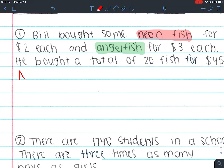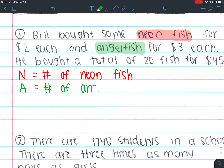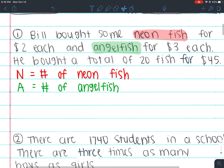Our first variable is n, representing the number of neon fish. We have to be specific — not just 'neon fish,' but the number of neon fish. And our other variable is a, representing the number of angelfish. You might wonder why not use 'nf' for neon fish and 'af' for angelfish. You don't want to add in more variables than you need — if you put 'nf,' now you have two separate variables. So if it's one thing, you put one variable. Don't try to be fancy. Everything will mess up.